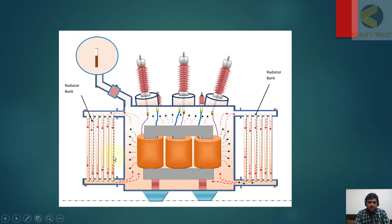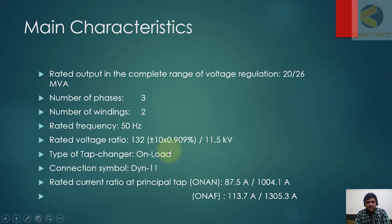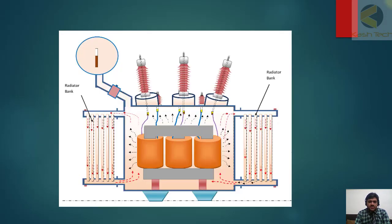The radiators have more surface area and are exposed to air, so the oil cools down and comes back — this is the natural circulation cycle. At the bottom, fans are connected to further increase the cooling effect. Another option is that a pump can be connected to force the oil to move faster through the radiator, increasing cooling further, but this is only used in big transformers.